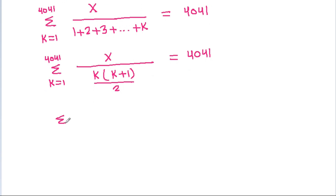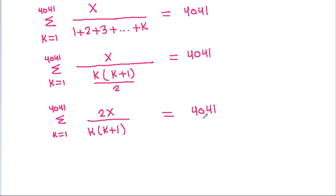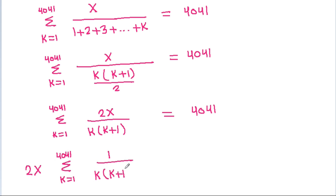And so this becomes the summation from k equal to 1 to 4041 of 2x by k times k plus 1, equal to 4041. That is, 2x times the summation from k equal to 1 to 4041 of 1 by k times k plus 1, equal to 4041.